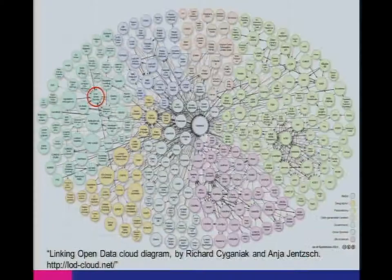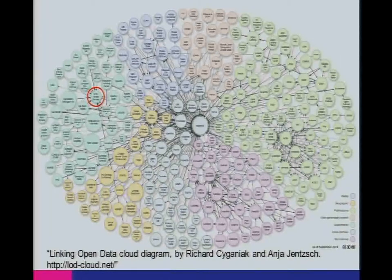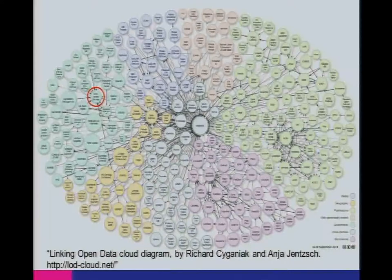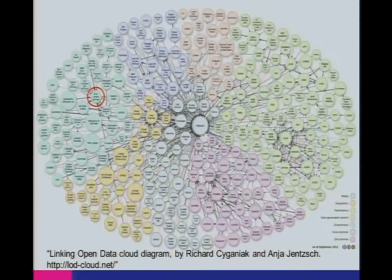I want to talk about some of the motivations. This is the obligatory linked data diagram — it's actually a couple of years out of date now. It tried to capture all of the linked data published on the web. Ordnance Survey is just at the top there, circled in red. You can see how many things link to OS — that hopefully gives you some indication.